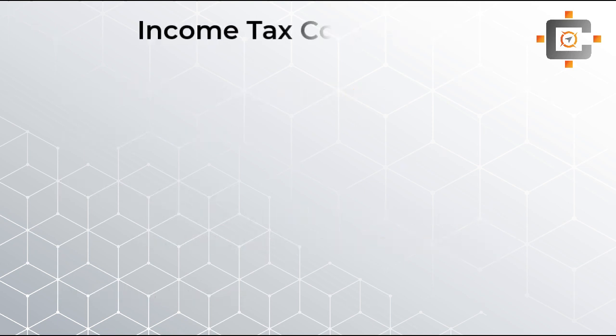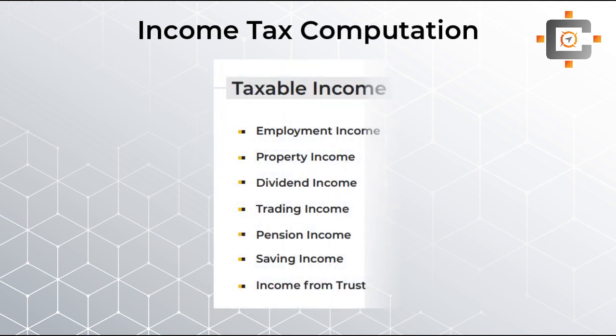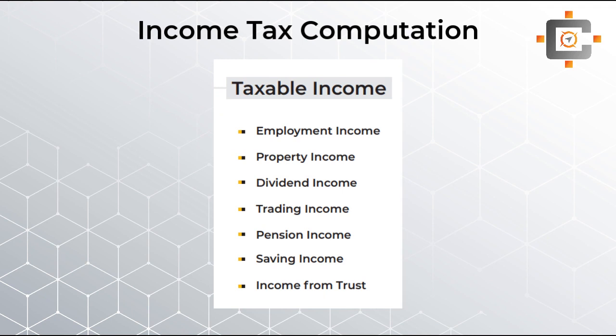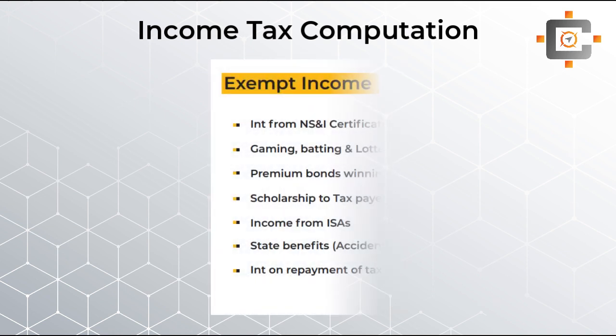The third thing is what exactly is the taxable income. There are lots of taxable incomes possible for individuals. Taxable income can be employment income, property income, dividend income, trading income, pension income, savings income, and income from trust. There are also lots of exempt incomes which are important for the examination. Exempt incomes include interest from NSI certificates, gaming, betting, lottery, premium bond winnings, and other exempt incomes you can see on the screen.